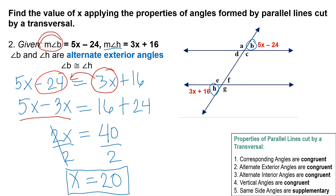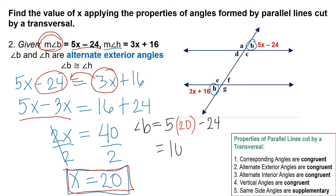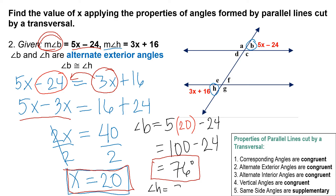To find angle B, substitute x equals 20 into 5x minus 24: 5 times 20 minus 24 equals 100 minus 24 equals 76 degrees. Since angle B and angle H are congruent, angle H is also equal to 76 degrees.